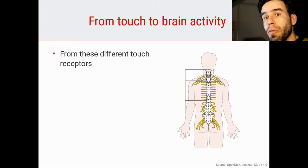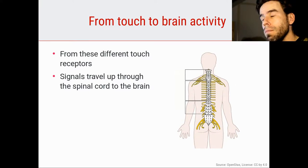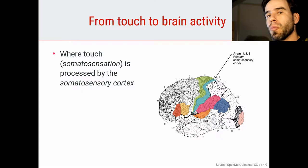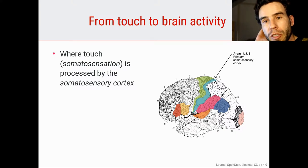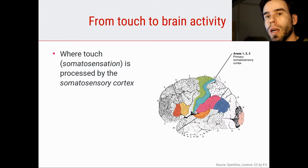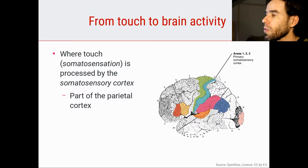From these very different touch receptors, the signals travel up through the spinal cord to our brain. And then in our brain, touch is primarily processed by the somatosensory cortex, which is part of the parietal lobe. So we've seen for vision that we have a primary visual cortex, V1. In our video about hearing, we've seen that we have a primary auditory cortex where auditory information is processed. And in the same way, we have a primary somatosensory cortex, part of the parietal cortex, where touch is processed.